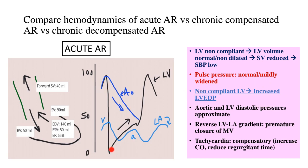The rise in LV end-diastolic pressure in acute AR leads to a unique finding: the aortic diastolic and LV diastolic pressures start approximating — which does not happen in chronic compensated AR. The LV diastolic pressures rise so much that they overshoot the left atrial pressures, creating a reverse LV-to-LA gradient. This leads to premature closure of the mitral valve during diastole — when the mitral valve should be open — resulting in what is known as functional mitral stenosis.